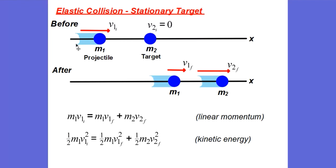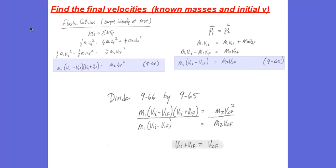The terms that had V2 initial in them disappear because V2 initial equals zero meters per second. Because it's an elastic collision, kinetic energy is going to be conserved, and in all collisions, momentum is conserved. Here is our equation for conservation of momentum and here is our equation for conservation of kinetic energy. We know the masses of our two objects and the initial velocity of the incoming projectile, so let's calculate the final velocities.